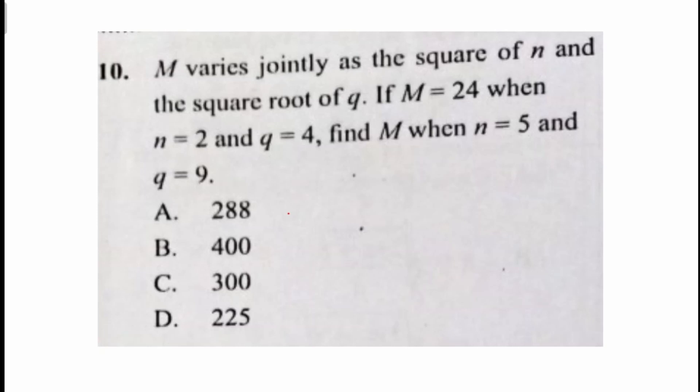Question 10 reads: M varies jointly as the square of n and the square root of q. If M equals 24 when n equals 2 and q equals 4, find M when n equals 5 and q equals 9. This is a variation question, more importantly joint variation.